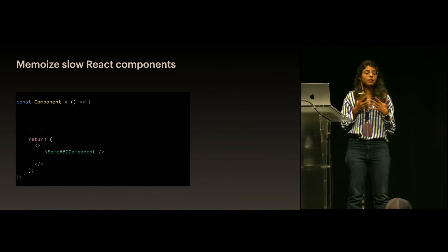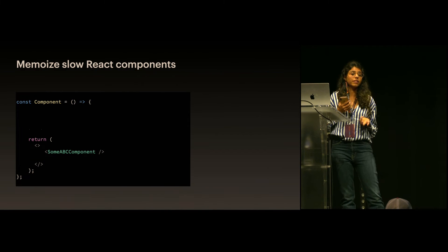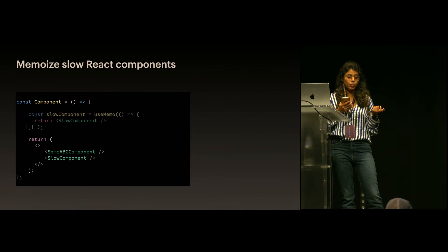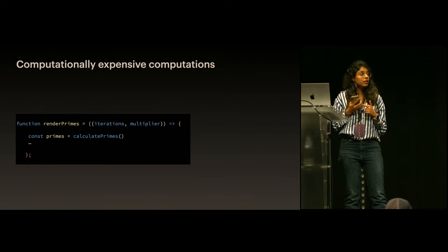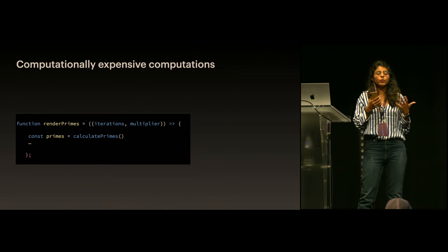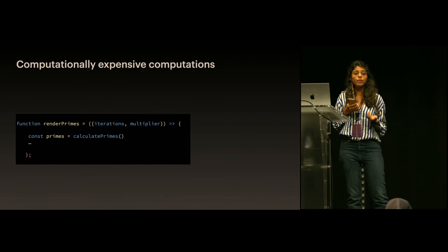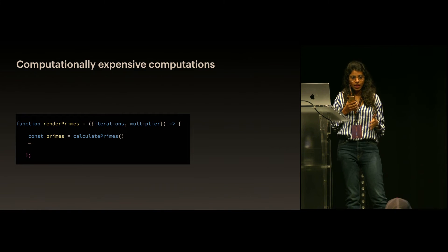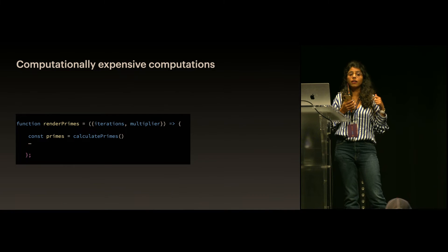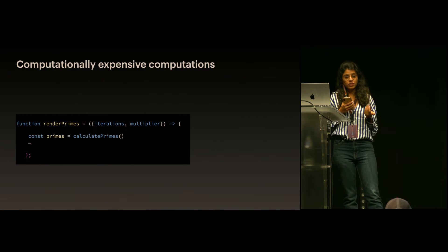Another use case is memoizing slow components. For React, what is slow is mounting, remounting, and re-rendering components. For slow components, we can wrap them in useMemo so that we don't have to re-render them. UseMemo can also be used for computationally expensive operations — not things like filtering or sorting an array, which are fast, but actual real computations like calculating primes or animation code. Most of the time we don't run into this, but if you have really complex computations, wrap your functions inside useMemo.